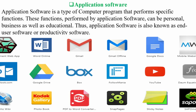Application software is a type of computer program that performs specific functions — personal, business, or educational. It is also known as end-user software or productivity software. Examples include Microsoft Word, Gmail, YouTube, Google Drive, Adobe Premiere Pro, and any program you use on your computer.